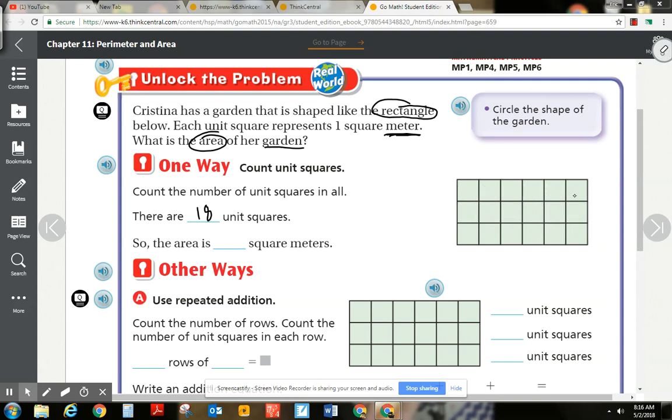Another way is to – I wouldn't recommend counting by sixes. That's kind of tough. But maybe you see 5, 10, 15, 16, 17, 18. There's lots of ways that you can count by ones. So the area is 18 square meters.